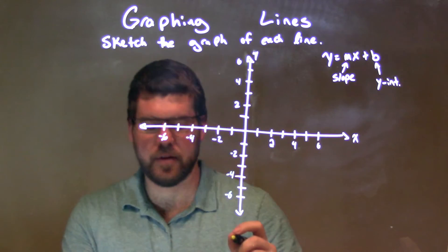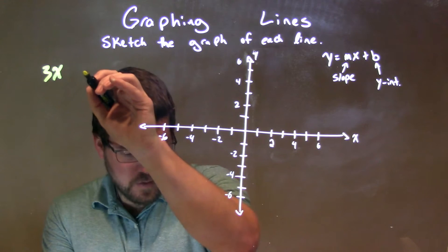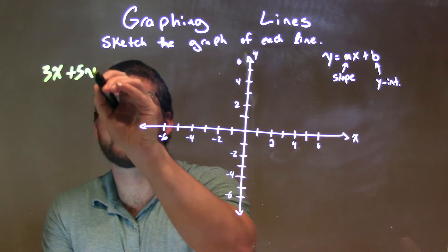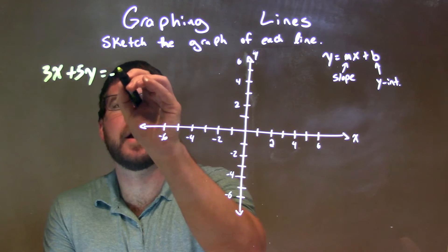So, if I was given this equation: 3x plus 5y equals negative 5.